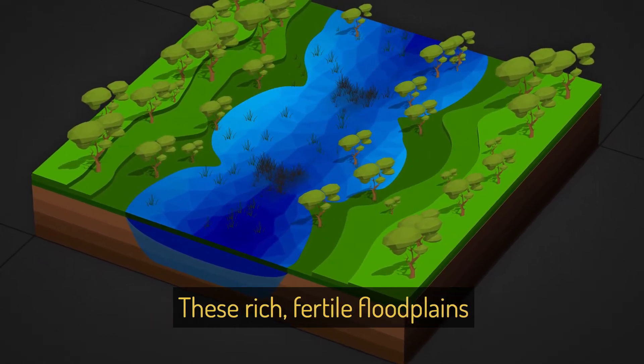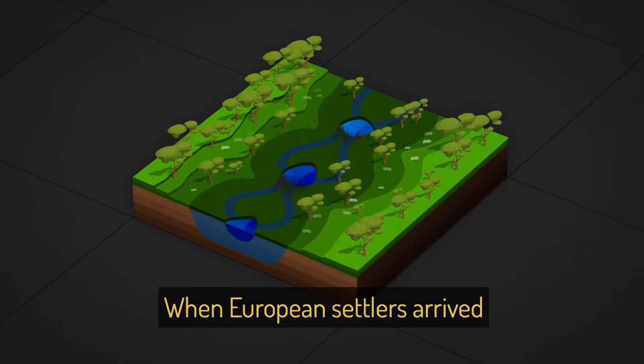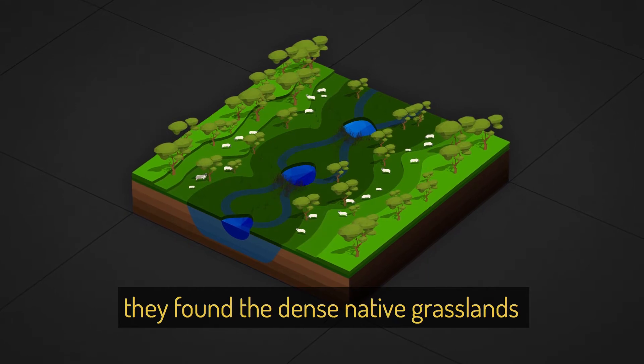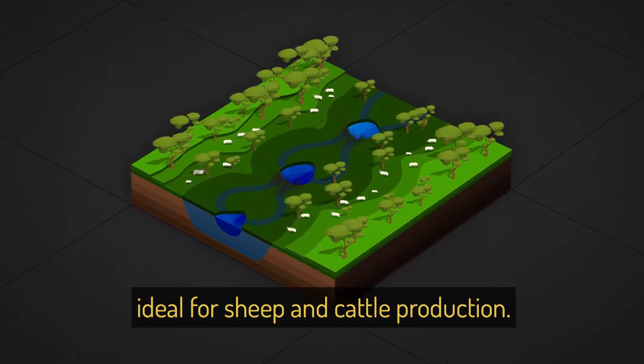These rich, fertile floodplains were widespread. When European settlers arrived, they found the dense native grasslands and abundant water ideal for sheep and cattle production.